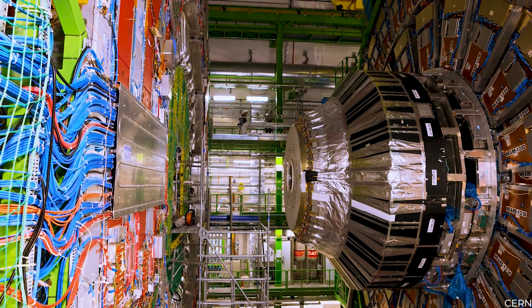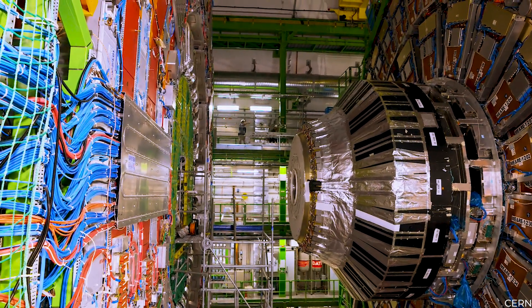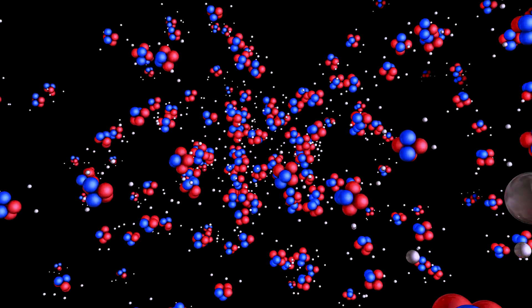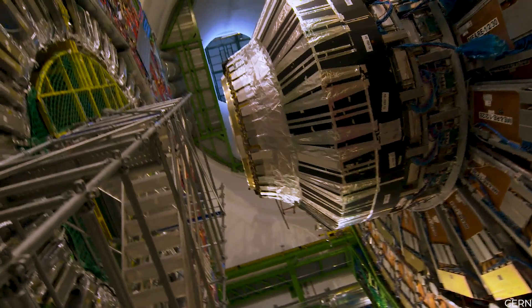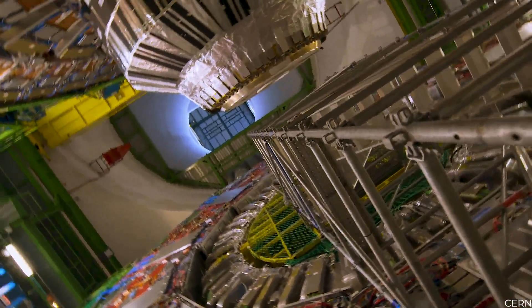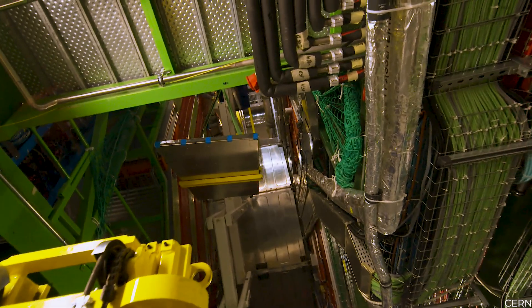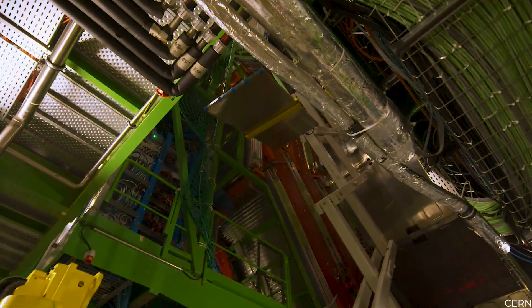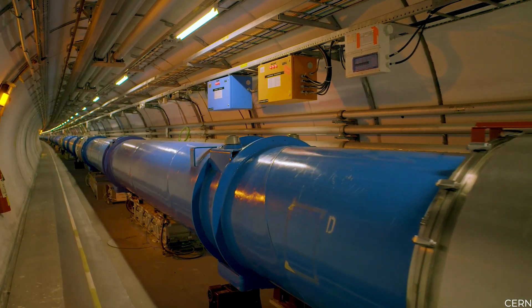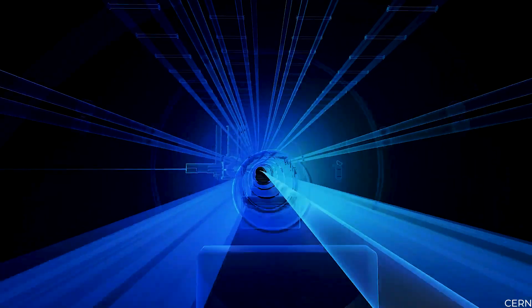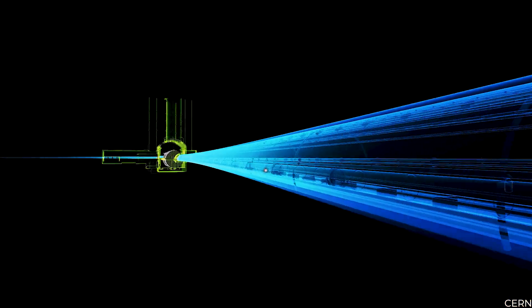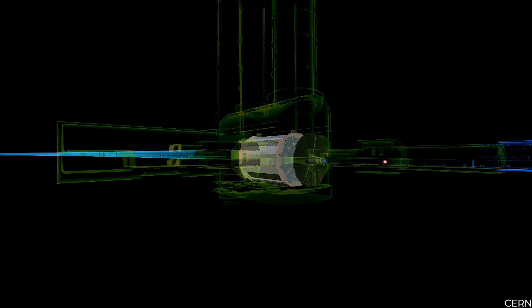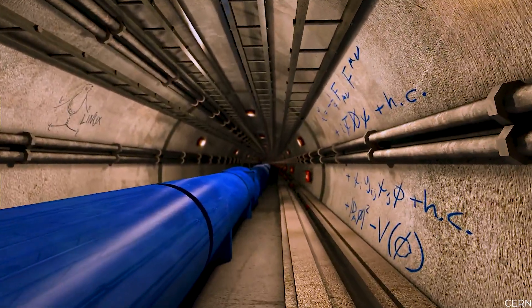CERN employs some of the world's largest and most complex machines to investigate nature's smallest building blocks, the fundamental particles. These are accelerators that accelerate tiny particles to a fraction of the speed of light and detectors that act as electronic eyes, allowing the particles to be seen. The Large Hadron Collider detectors turned on all subsystems and began recording high energy collisions at unprecedented energy, kicking off a new physics season.